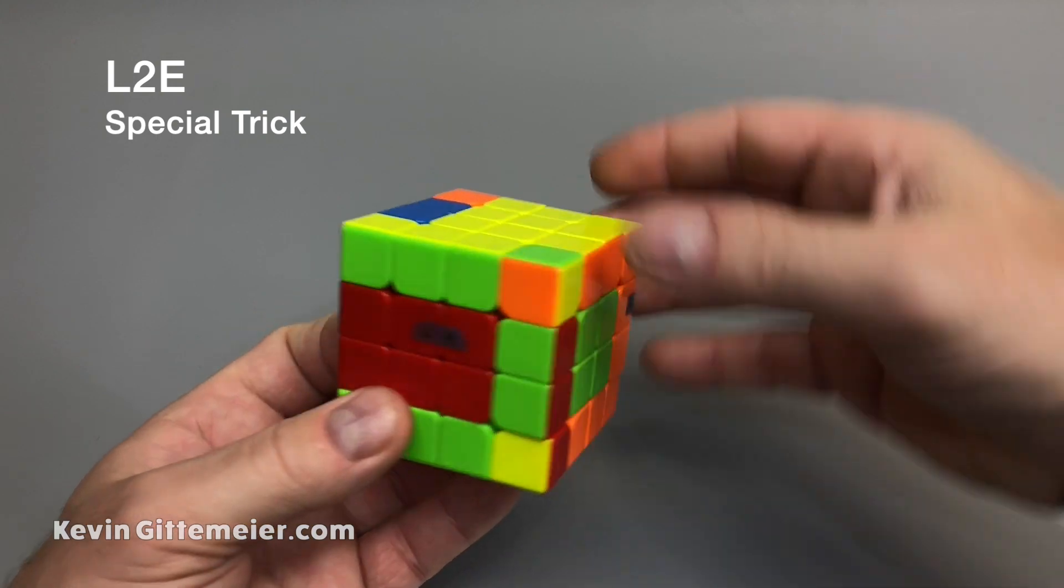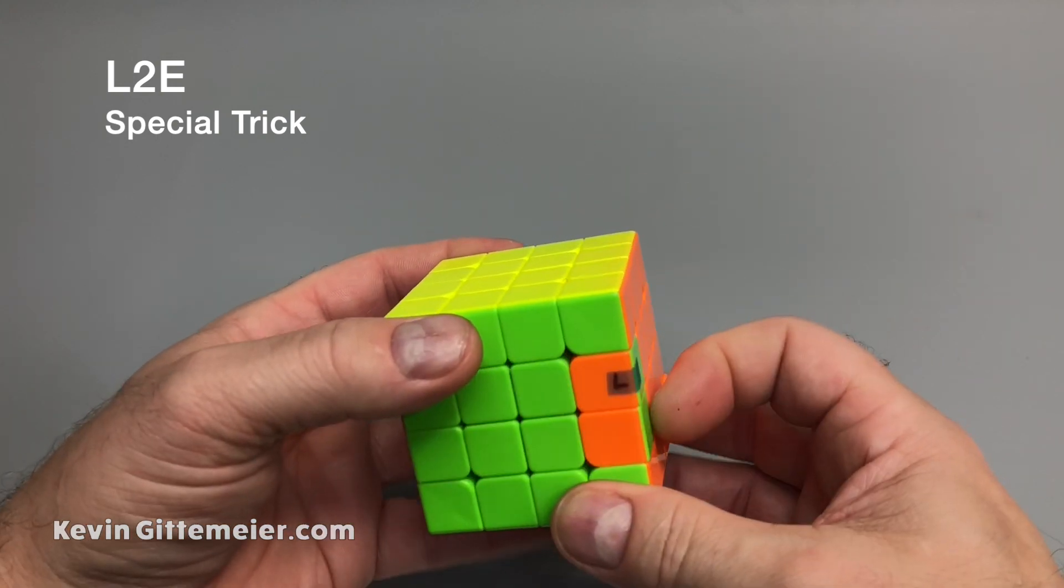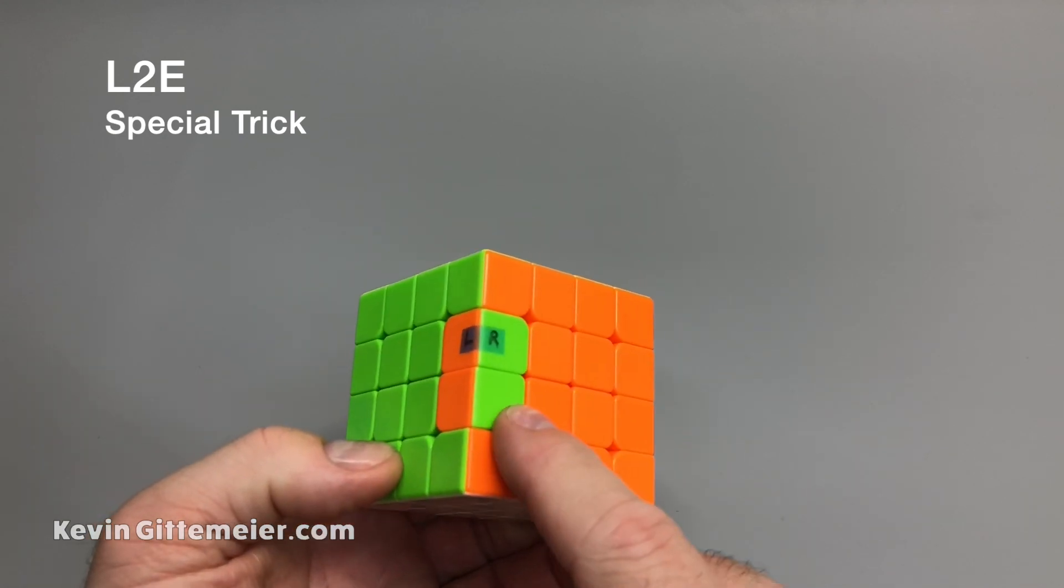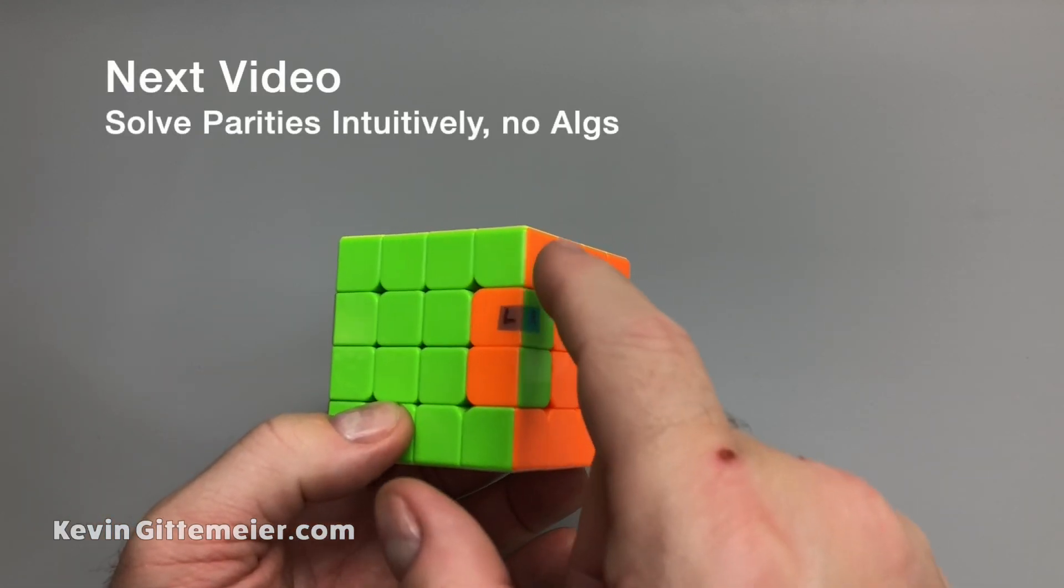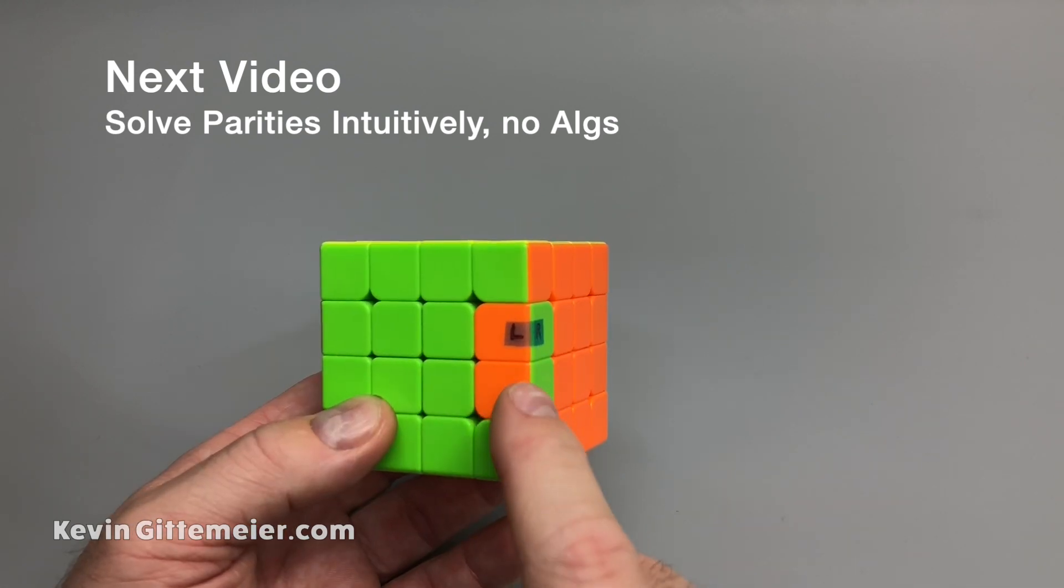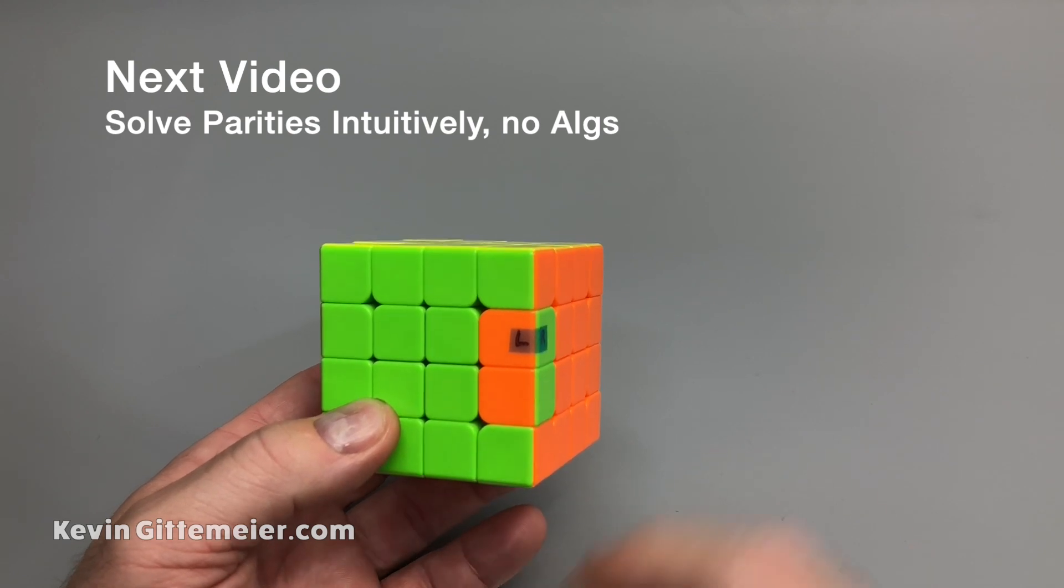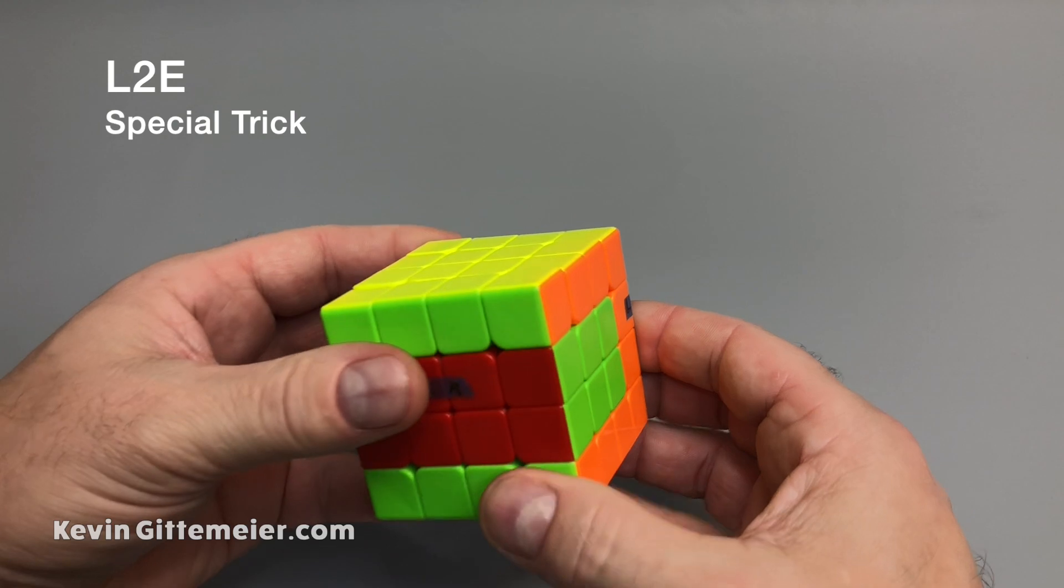But watch what happens when I resolve the top here. I'm going to flip this pair. We end up with a parity. So four-by-four parity with everything we've learned already, we're actually going to solve this parity, and I'm going to do a video on how to solve this parity intuitively with no algorithms. So let me just return this the way it was.